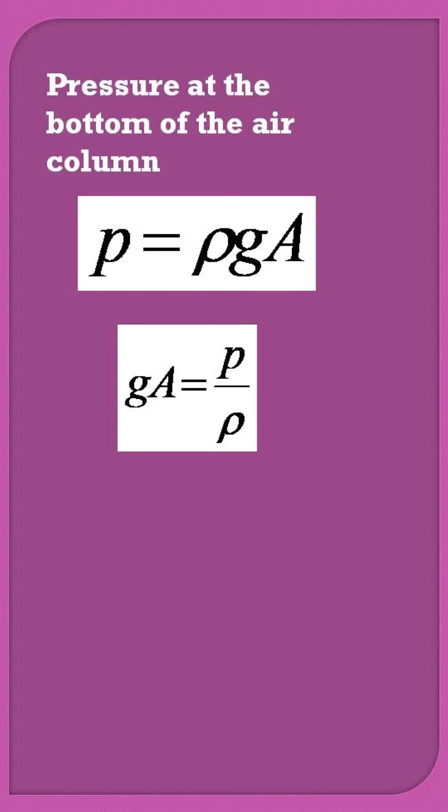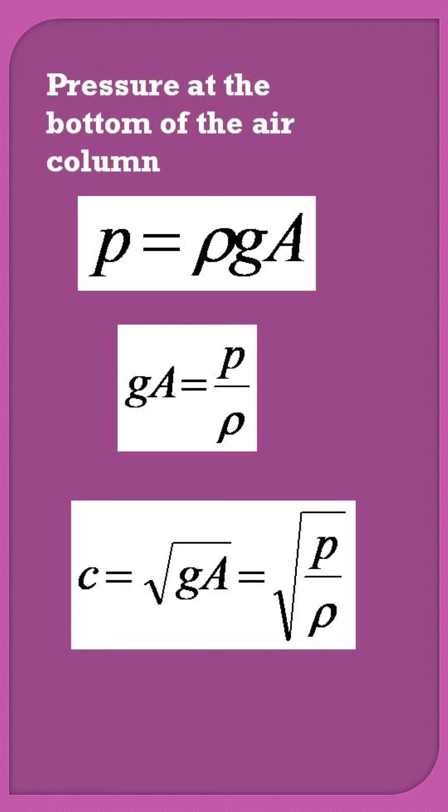This gives ga = p/ρ. After getting the value of ga, it is simply put in the speed of sound formula which Newton gave as c = √(ga), and it becomes equal to √(p/ρ), which is the formula given by Newton for the speed of sound in air.